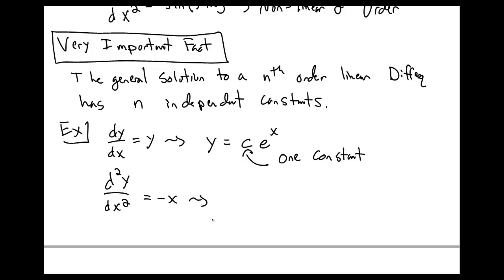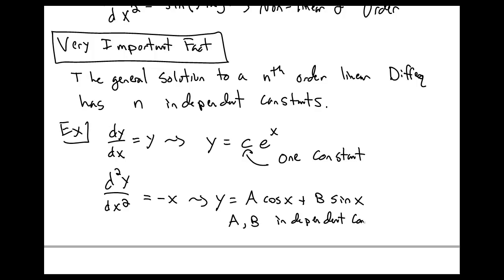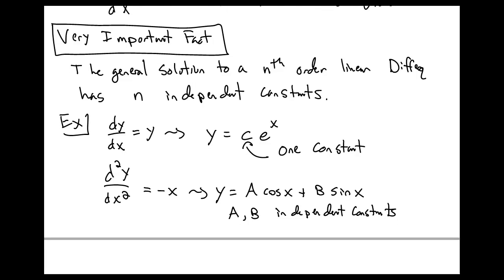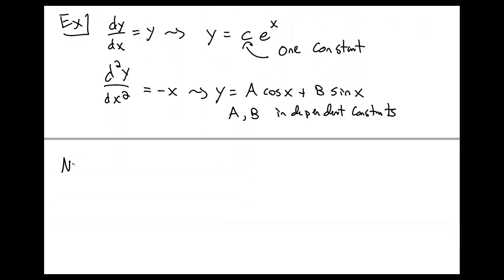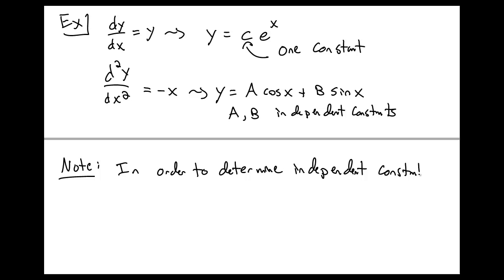By contrast, d²y/dx² equal to negative x — the general solution there is a·cos(x) plus b·sin(x), and the constants a and b are two independent constants. So for a second order equation, you get two independent constants. Note that in order to determine these n independent constants in your general expression, you need the same number of initial conditions as you do constants.